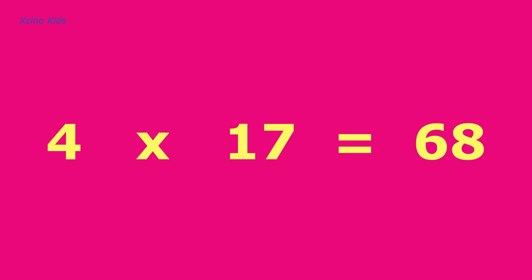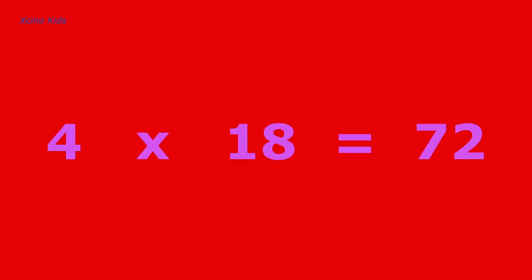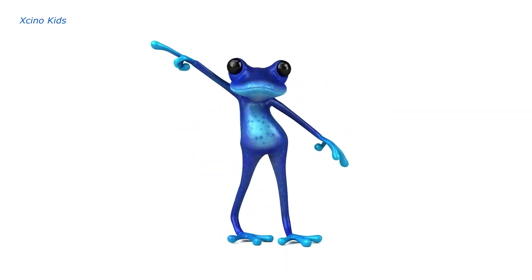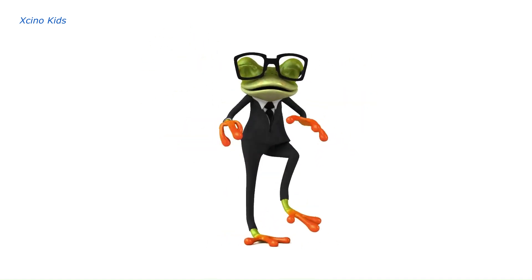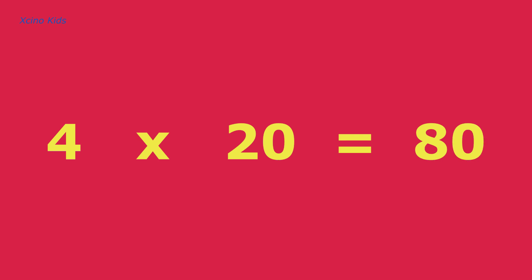4 times 17 equals 68. 4 times 18 equals 72. 4 times 19 equals 76. 4 times 20 equals 80.